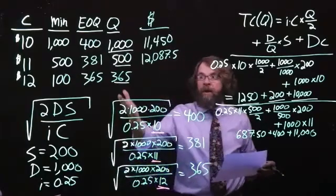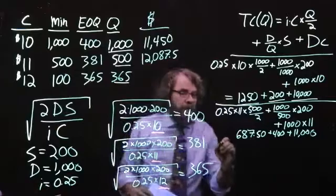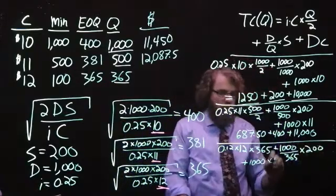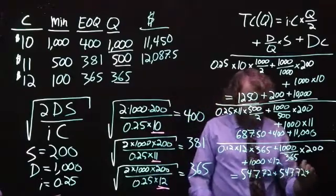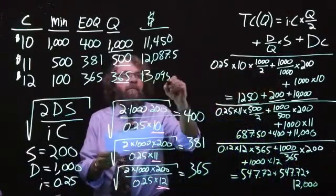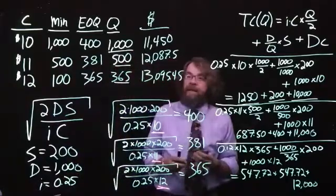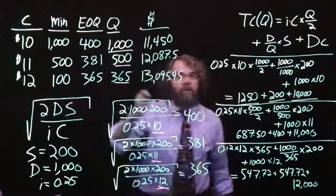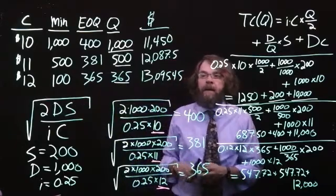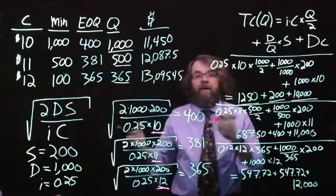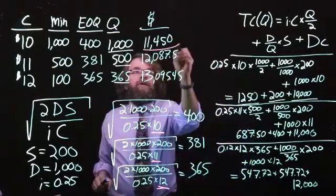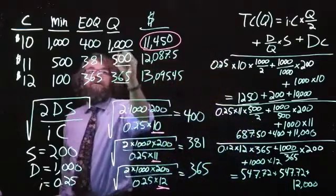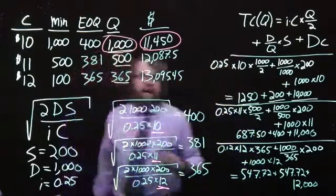Lastly, we will look at buying 365 units at a price of $12. What we see in the end is when the purchase quantity is 365 at a price of $12, total cost is $13,095.45. Therefore, the cheapest total cost comes from $11,450 when we purchase 1,000 units at a time.